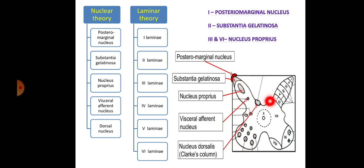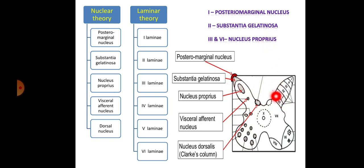Coming to the laminar theory, this posterior grey horn is further divided into laminae: lamina number 1, 2, 3, 4, 5, and 6. Now comparing nuclear theory and laminar theory: the first lamina is concerned with the posterior marginal nucleus, the second lamina is related to the substantia gelatinosa, and the third to sixth laminae are mainly concerned with the nucleus proprius. The visceral afferent nucleus and dorsal Clark nucleus also come under this area.